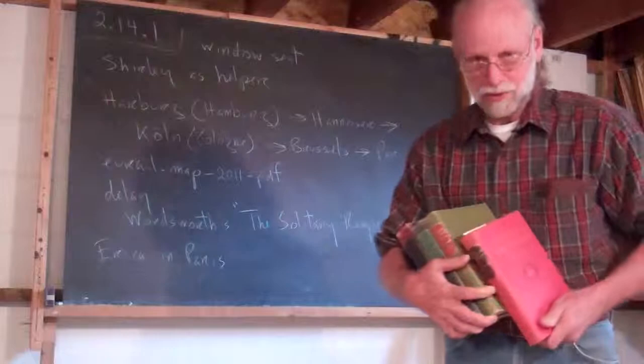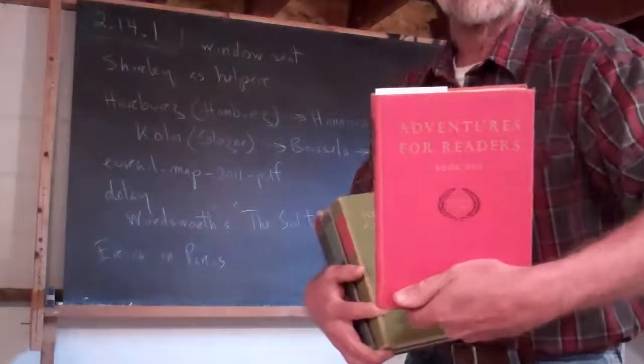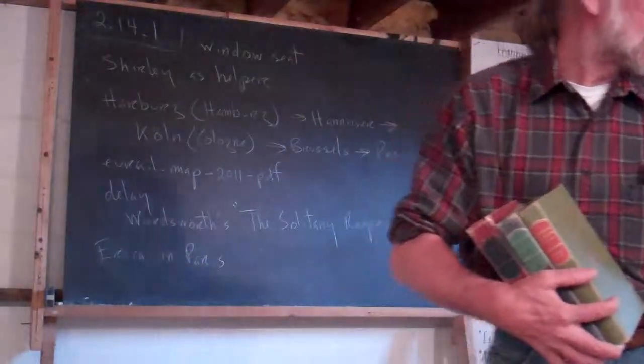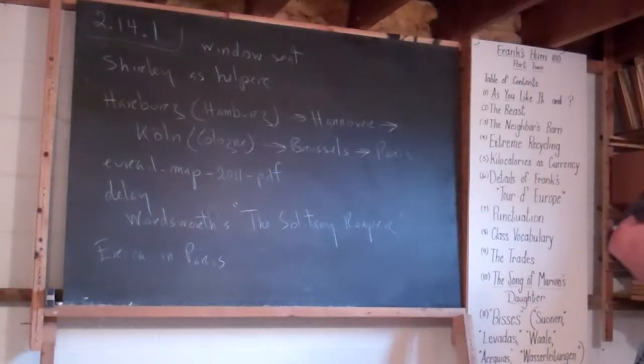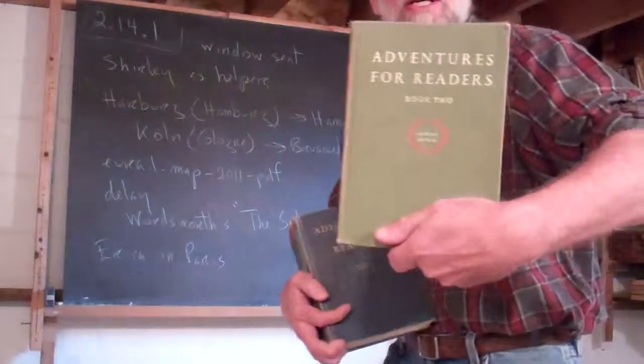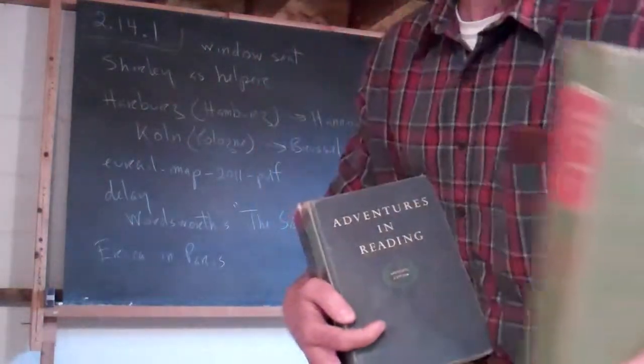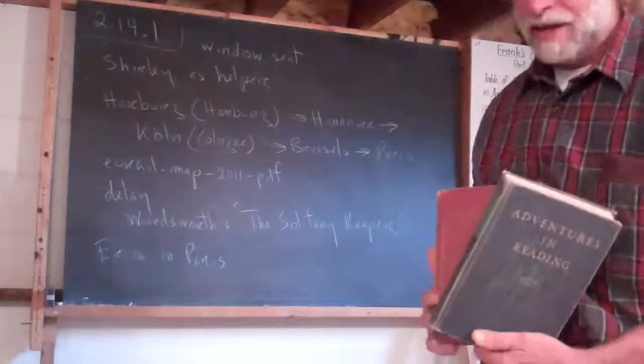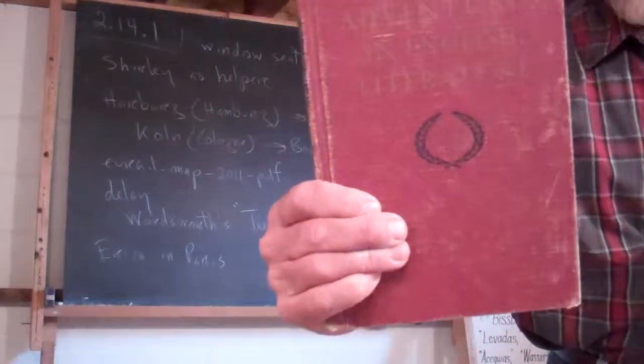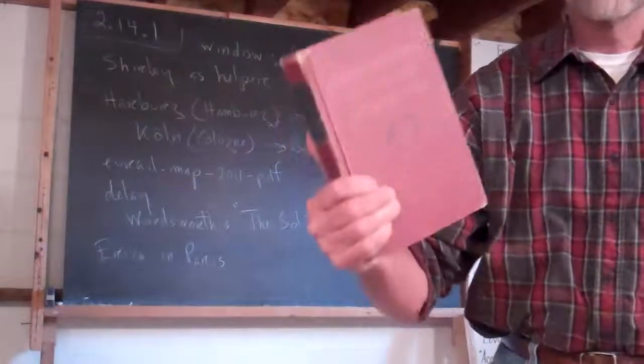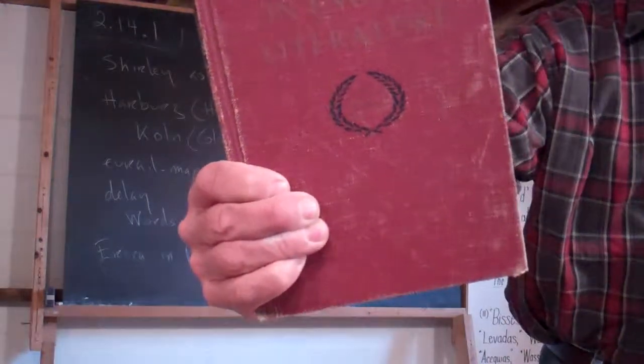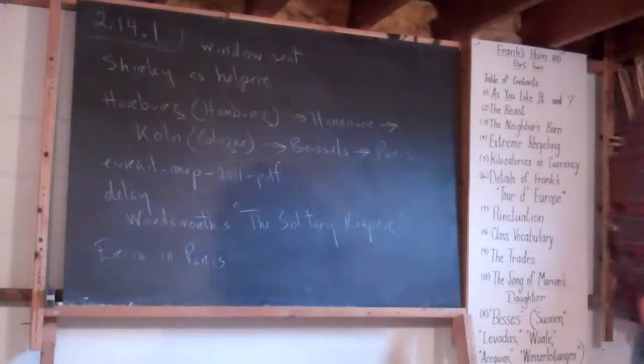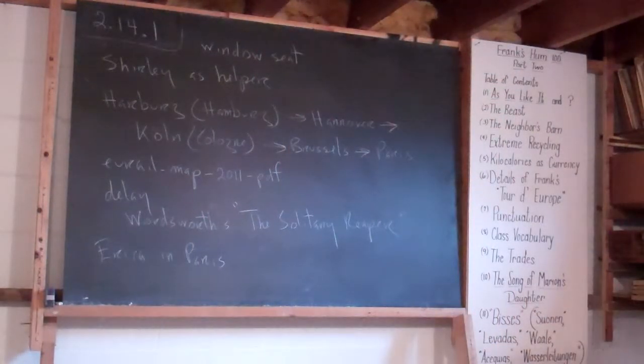It's Wordsworth's poem called The Solitary Reaper. It's in this collection of books. That's a 7th grade literature book. That's the one I'm going to show you. Here's the 8th grade one. Very, very good. I've taught from both of those. Here's the 9th. I haven't ever taught from that. And here's the 10th grade book, Adventures in English Literature. Possibly the best literature book I have ever seen. But anyway, back to Wordsworth.